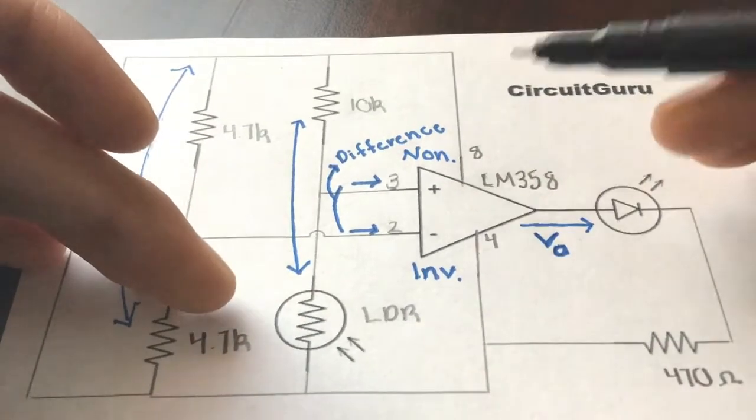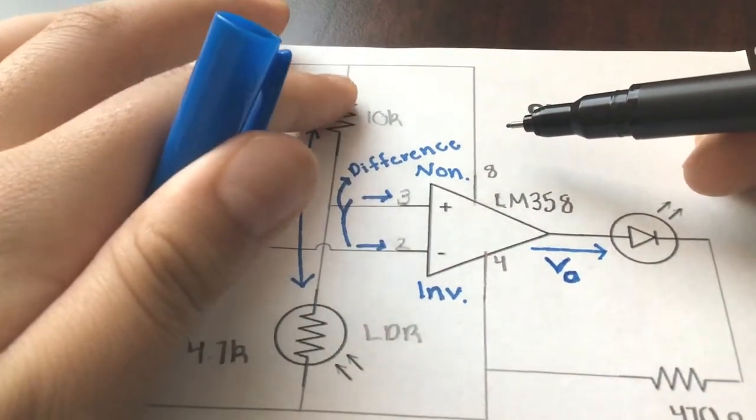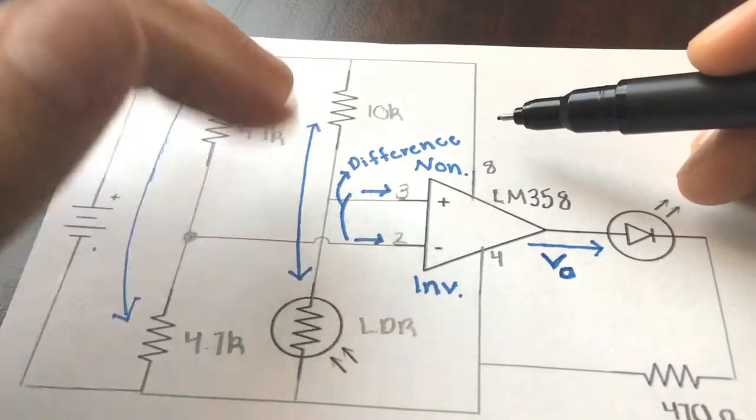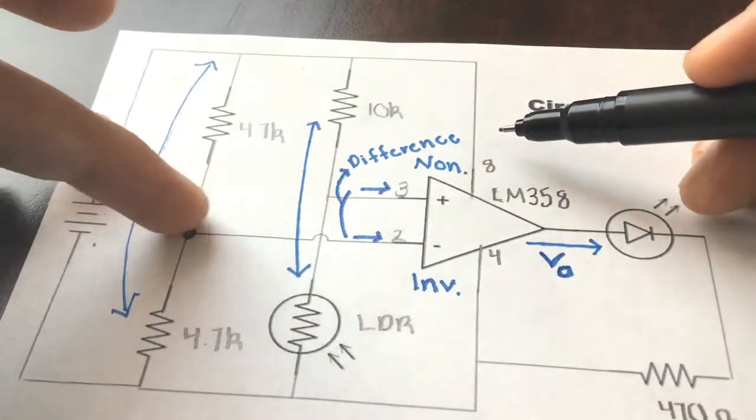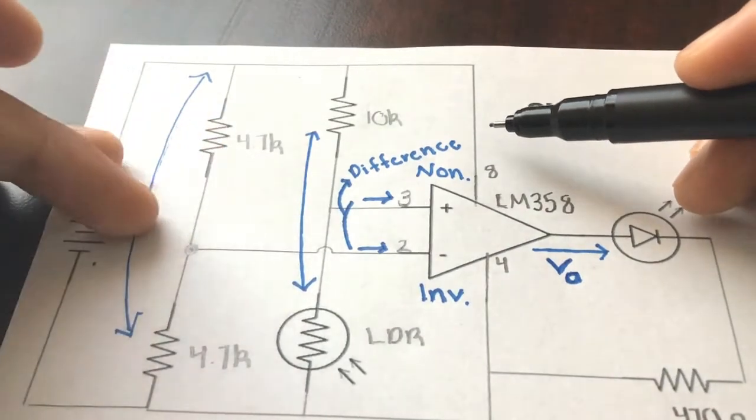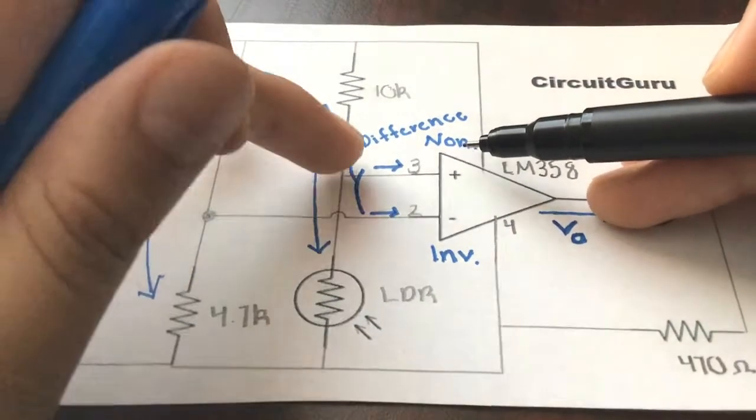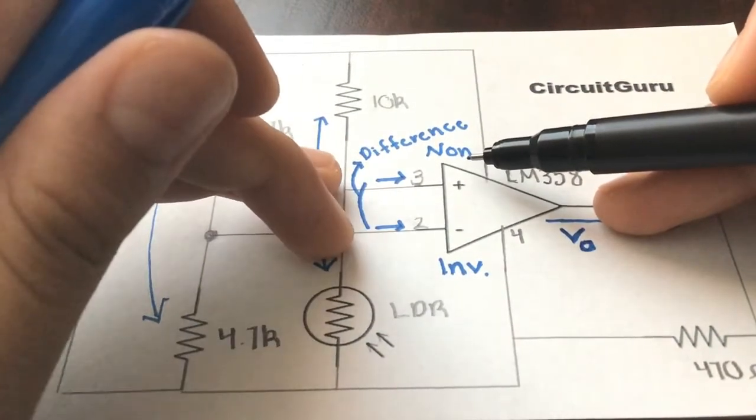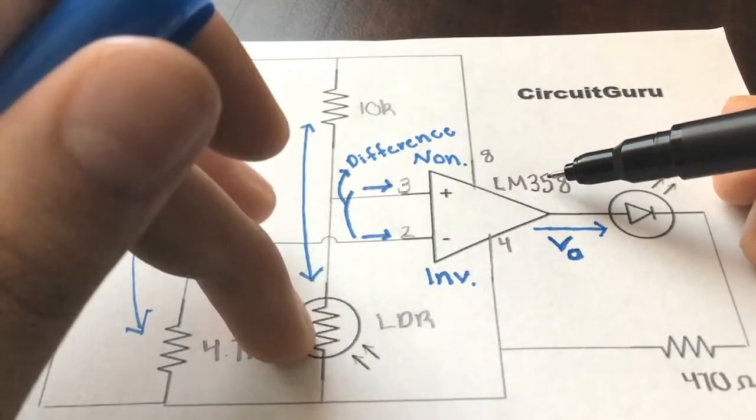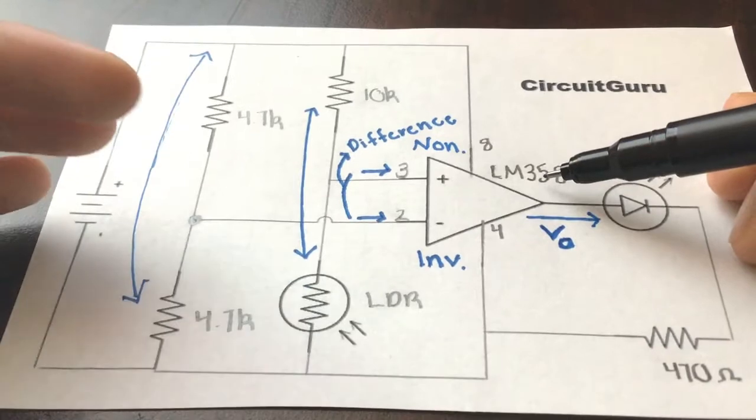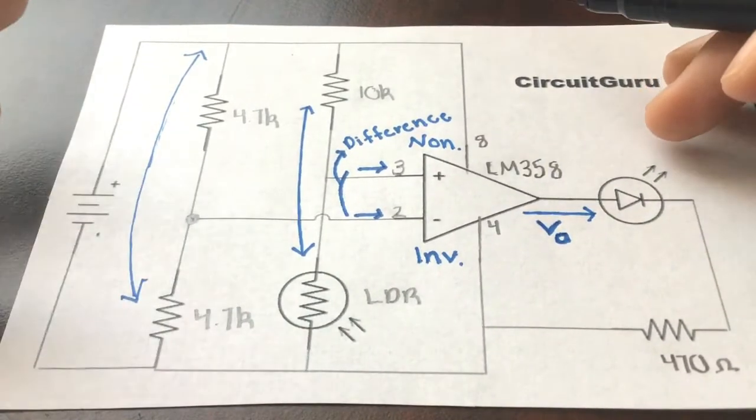How the circuit works is the LM358 op amp receives two inputs. One is where the 10 kilo ohm resistor is in the LDR at the non-inverting input, and on the inverting input we have the voltage divider between the 4.7 kilo ohm resistors. It takes those two inputs and finds the difference between these two voltages. When it finds the difference, the amount of light basically changes the voltage or resistance, because basically if you have a higher resistance, then the voltage will change.